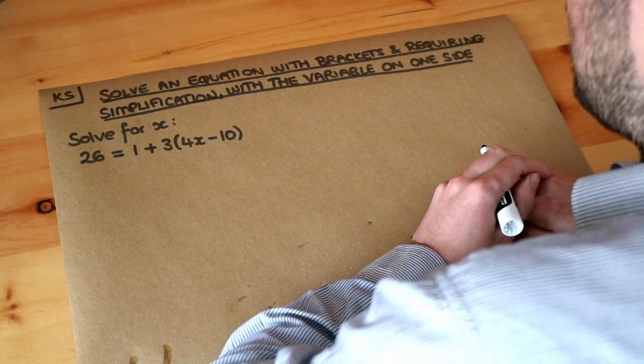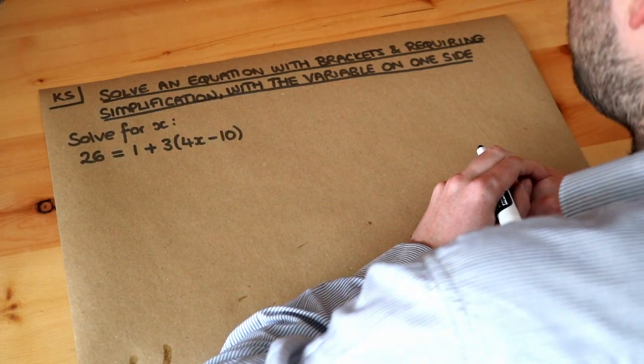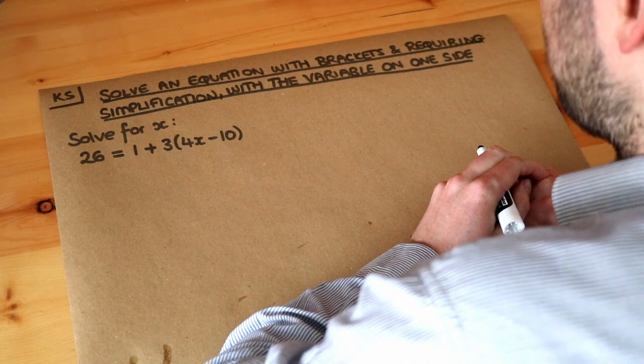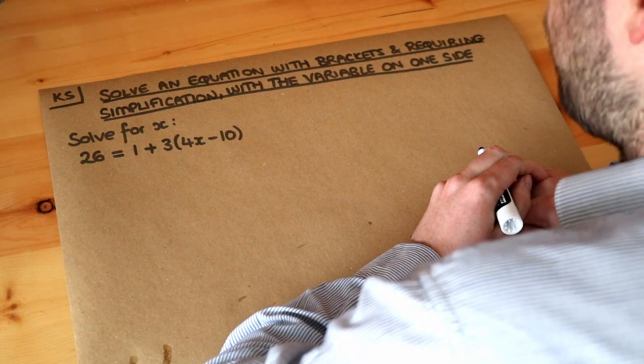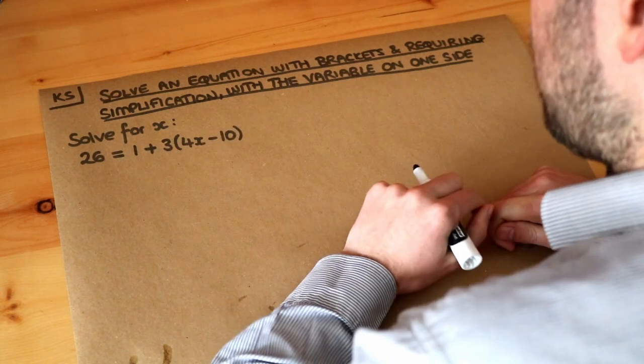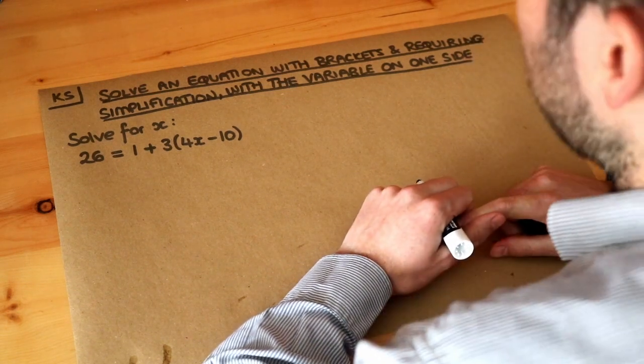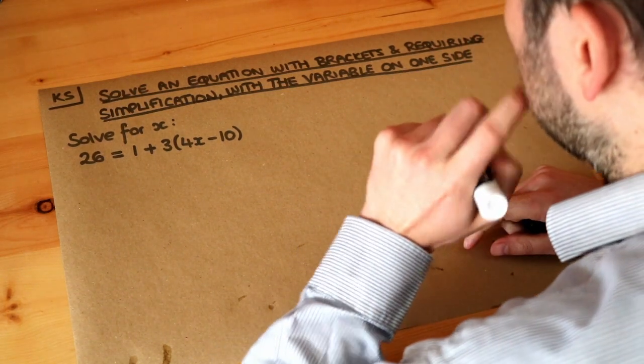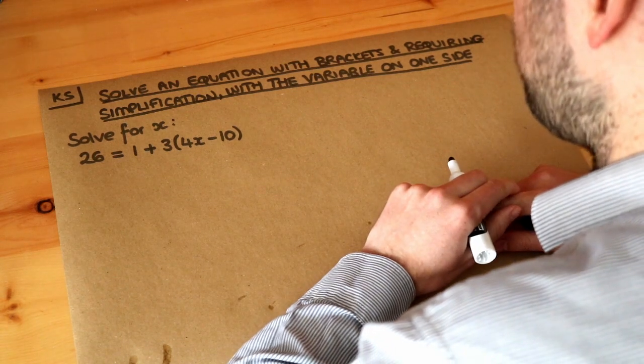Hello and welcome to this Dr. Ross-Math's key skill video on solving an equation with brackets and requiring simplification with the variable on one side. So we've got this equation here: 26 equals 1 plus 3 brackets 4x minus 10, and we want to find the value of x, we want to solve for x.